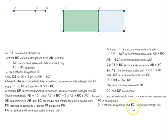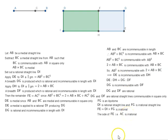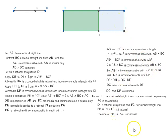DI is a rational straight line and FG is an irrational straight line, which means FE — that is, DI by FG — is irrational. Therefore the side of FE, which is AC, is irrational. This means that if we have a square whose area equals FE, then its side AC is irrational. Euclid calls this a second apotome of a medial straight line. That is Proposition 75 of Book 10 of Euclid's Elements.